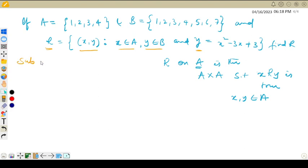Now let us substitute x equal to 1 in this equation. So you will get y is equal to 1 square, 1 square is 1, 3 into 1 is 3, plus 3, which is just 1.